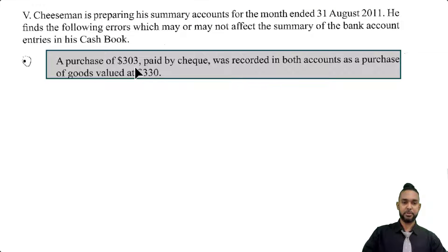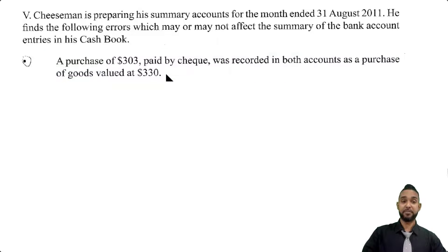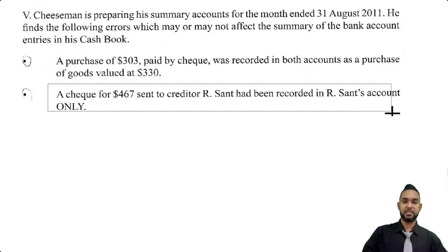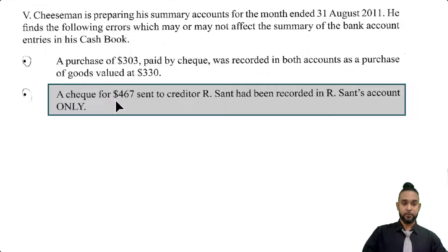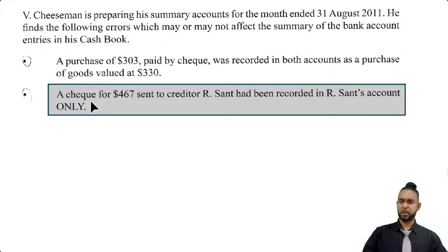First up, a purchase of $303 paid by check was recorded in both accounts as a purchase of goods valued at $330. So that figure is too high and we're going to have to fix that. Next, there's an error where a check for $467 sent to a creditor, RSAN, has been recorded in RSAN's account only. Since it's a check, we were supposed to record that in a bank account as well. So this is a one-sided error and we'll probably need the suspense account for that.